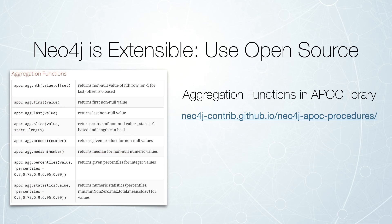Before you go off and write your own aggregation functions, you might want to look at what open source has already been written for Neo4j developers. For that, check out one of the most popular open source projects used by the Neo4j developer community — the APOC library. The APOC library is a library of 400 or 500 different user-defined procedures, functions, and aggregation functions. You can see a list of some of the types of aggregations it allows, including medians, percentiles, and slicing up results.